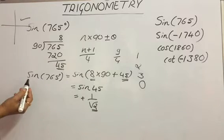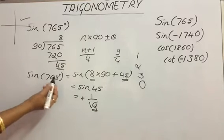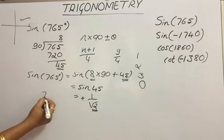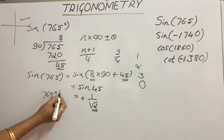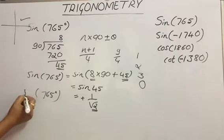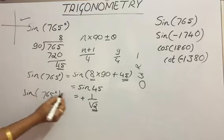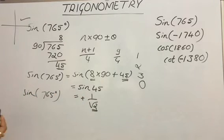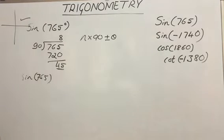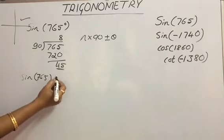The value of sin 45° is 1/√2. So the value of sine 765° is equal to 1/√2.